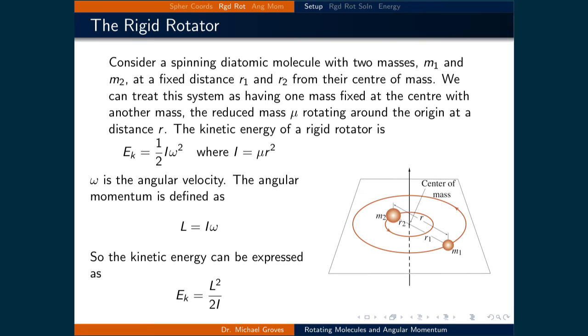Where I, being the moment of inertia, is μ times r². Omega in this case is called the angular velocity. The angular momentum is defined as the moment of inertia times the angular velocity, and so the kinetic energy can be expressed as L² over 2I.